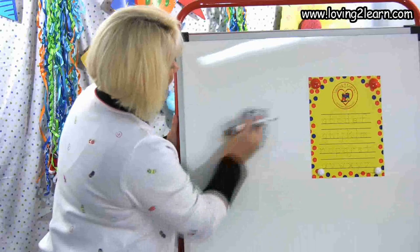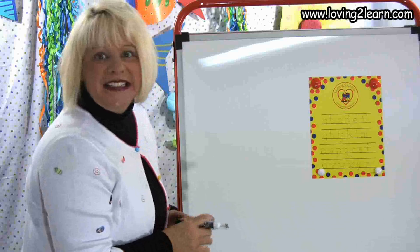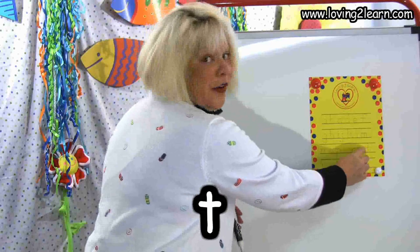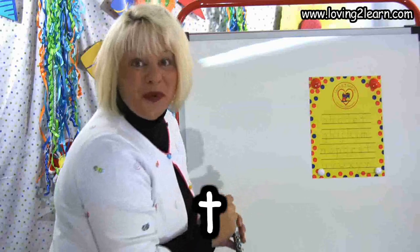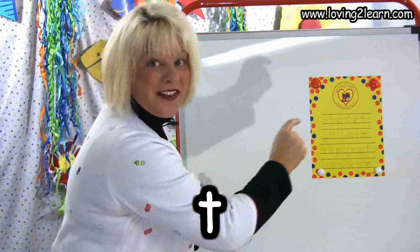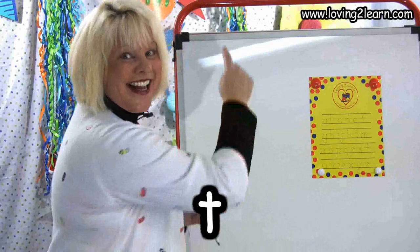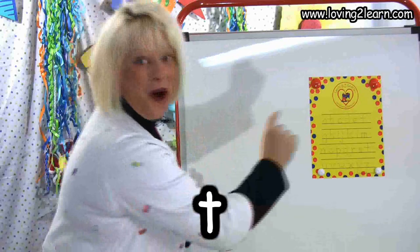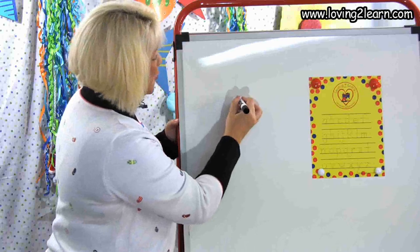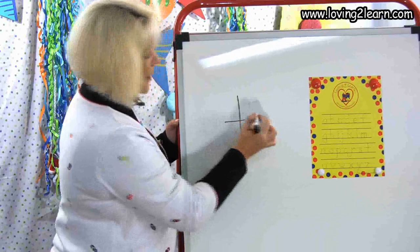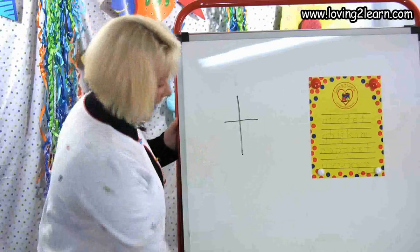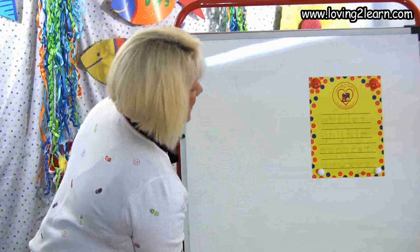The next small letter is the letter T. T, we go straight line down, cross in the middle. Do it with me: straight line down, cross in the middle. We'll do it on the wipe-off board: straight line down, cross in the middle. There's the letter T.